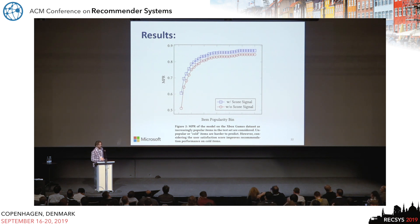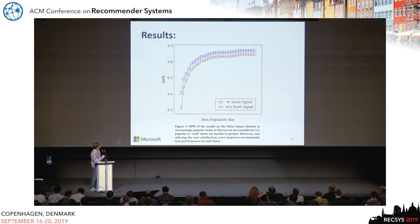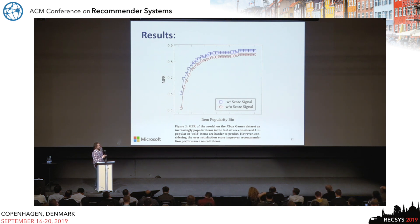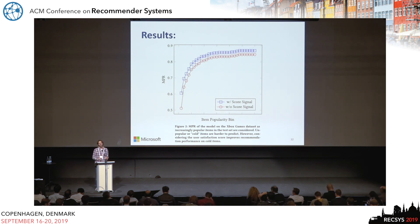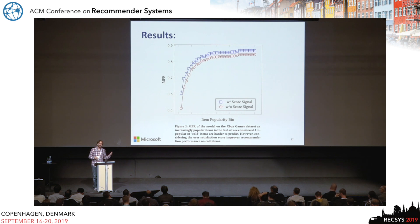For the specific case of Xbox games, we compared the full model trained with both the binary signal and satisfaction scores against the same model trained only on binary purchase probabilities — measured by NDCG by item popularity. By introducing satisfaction scores, at least in this case, we achieved better prediction of the next purchase. This confirms the tasks are correlated, and the choice to share parameters is justified: users do tend to buy items that will make them happy.